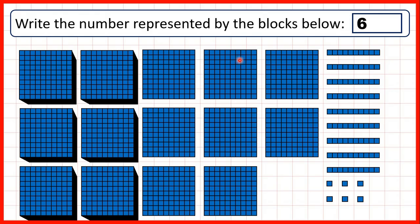Here we have six thousands, we have eight hundreds, we have nine tens, and we have six ones. So we have the number six thousand eight hundred and ninety-six.